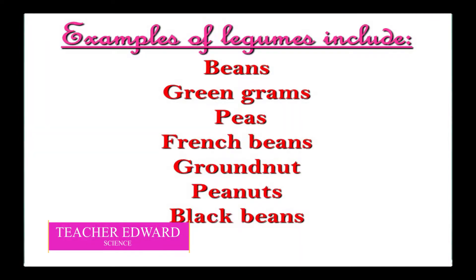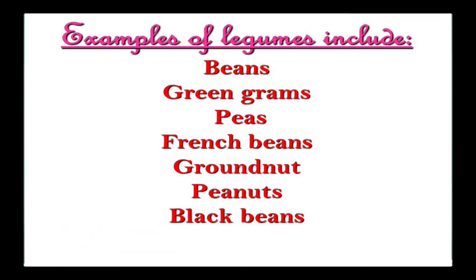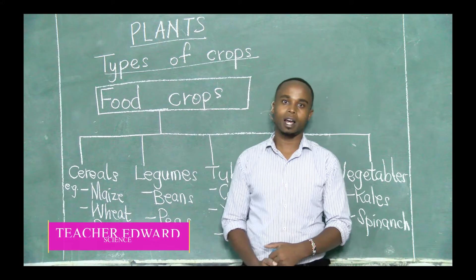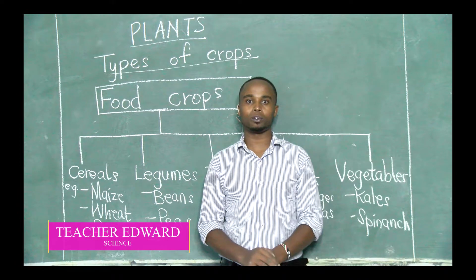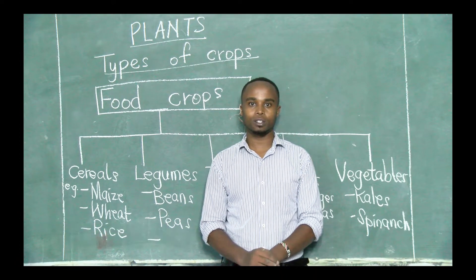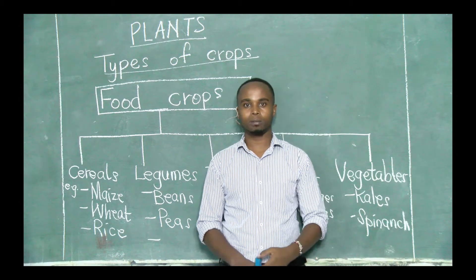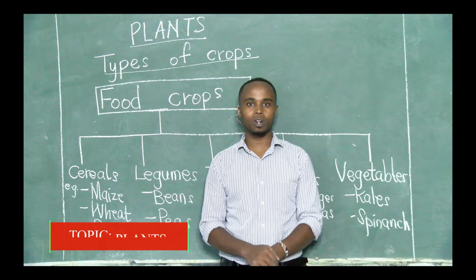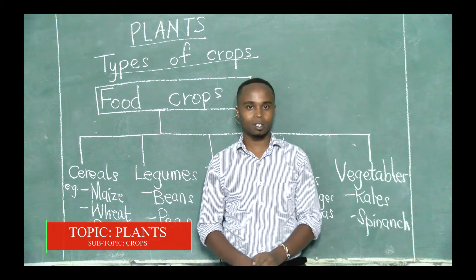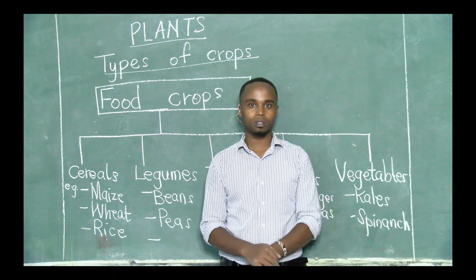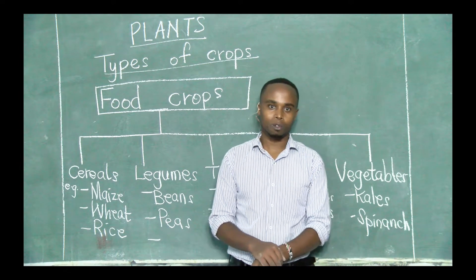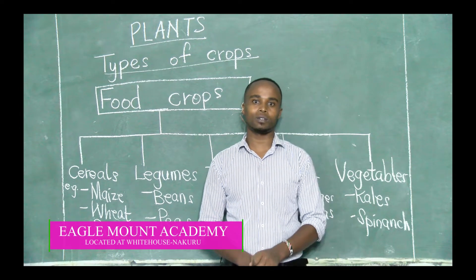After this, make sure you add ten more examples of legumes. Refer to your books and I know you'll get more than ten examples of legumes. Make sure you write them down and go through them at your own time. Then from there, there is another group of food crops — we call them tubers. Tubers are crops that we mostly eat their storing roots or their modified stems.